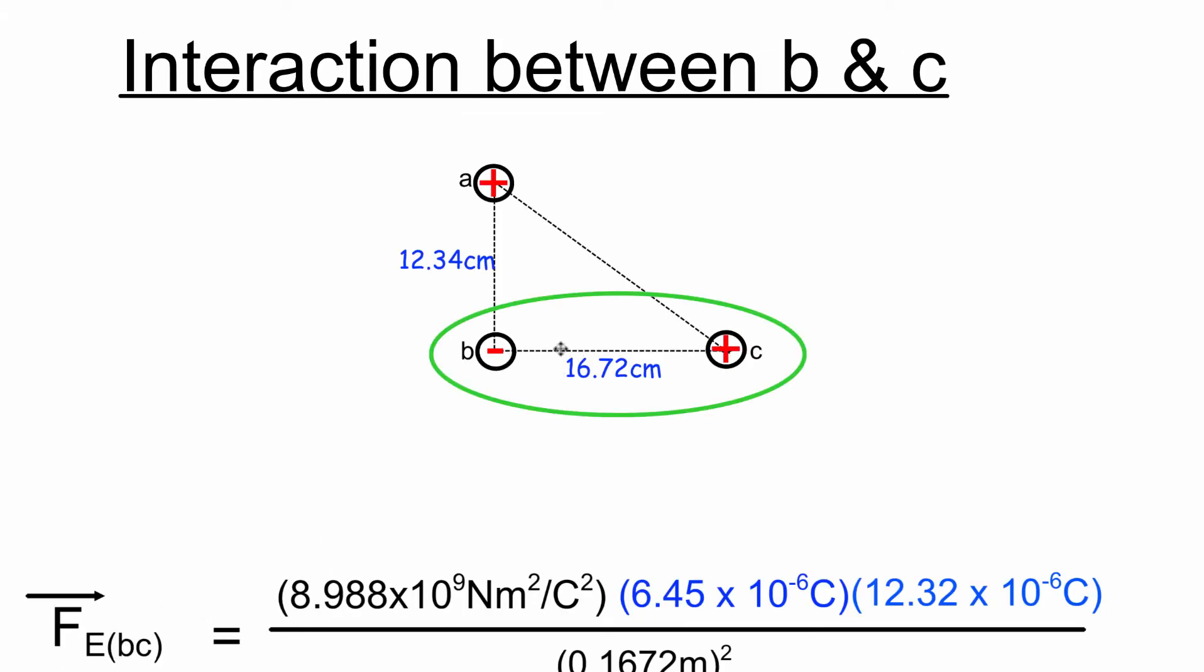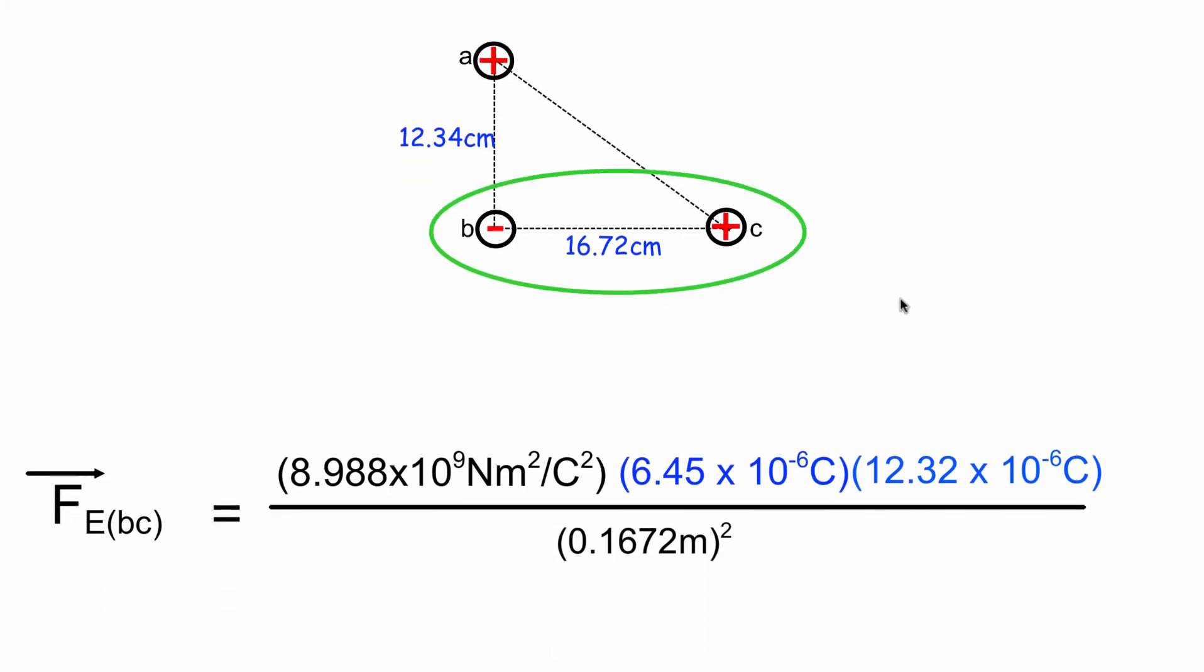B is negatively charged, C is positively charged, which means C will be pulling in B towards the right. Distance of separation is 16.72 centimeters. Coulomb's equation, here's our K, this is our charge on B, this is our charge on C, and the distance of separation in meters.